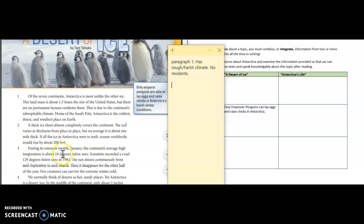Paragraph two: A thick sheet of ice almost completely covers the continent. The ice varies in thickness from place to place, but on average it is about one mile thick. Whoa, that just made my brain go wow. If all of the ice in Antarctica were to melt, oceans worldwide would rise by about 200 feet. That's incredible. So paragraph two I learned that it's basically covered by this sheet of ice. They even said in some areas it's like one mile thick.